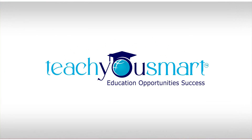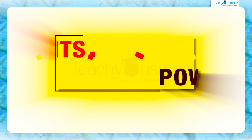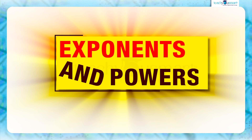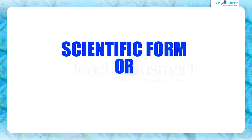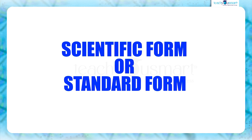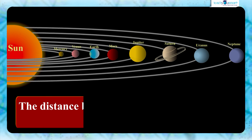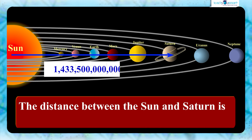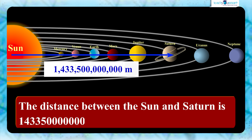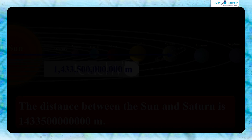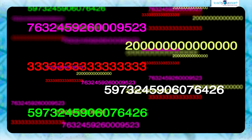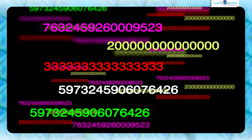Hello students, welcome to Teach You Smart. Let's continue our journey through exponents and powers. Today we are going to learn how to express large numbers in scientific form or standard form. In our daily life, sometimes we have to deal with large numbers. For example, the distance between the sun and Saturn is 1,433,500,000,000 meters. Dealing with large numbers can be challenging as they are difficult to write and read.